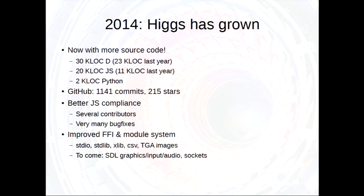So now I'm back this year to tell you about HIGS. HIGS has grown quite a bit since last year. It went from about 23,000 lines of D code to 30,000 lines. The amount of JavaScript code has almost doubled. We've got over 1,100 commits on GitHub, 215 stars. It's also much more JS compliant than it was last year. We've gotten some contributors, many bug fixes, many more unit tests. We've got an improved foreign function interface with some useful libraries to do input/output, graphics, and such things.